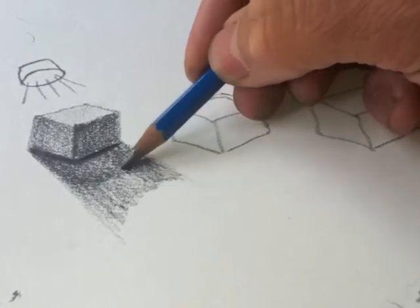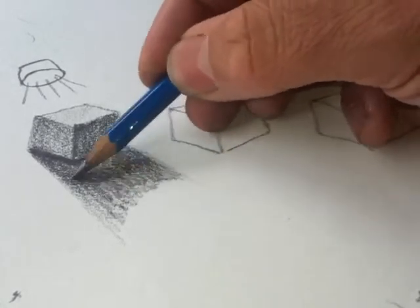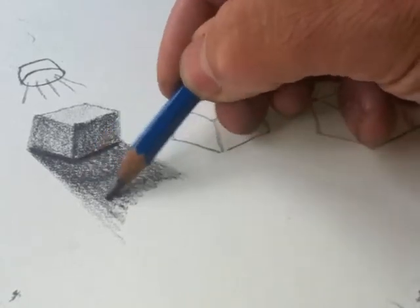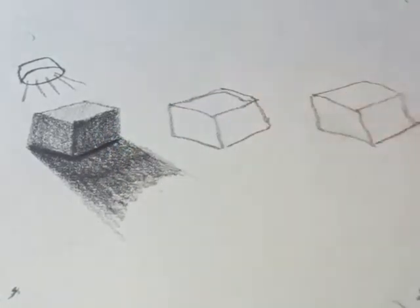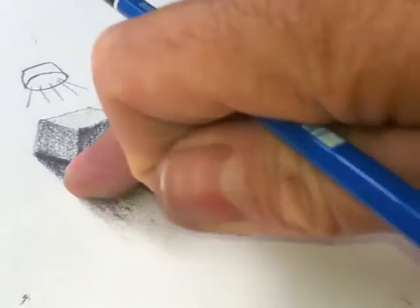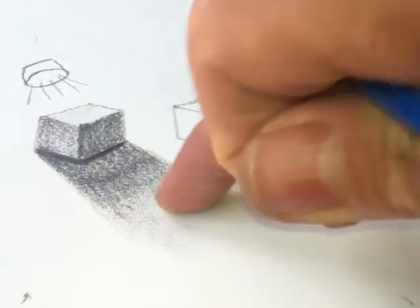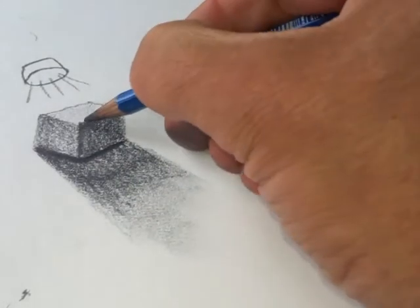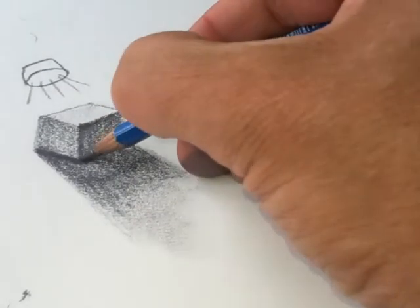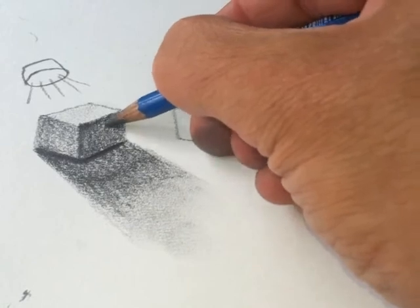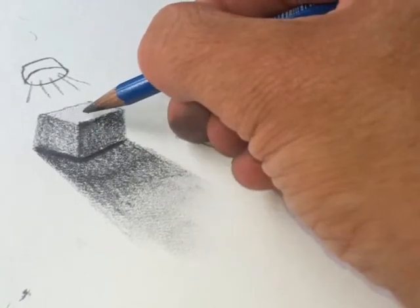So you need to blend that in so you don't see where it's gone dark and light, and that uses the technique that we've learned before about the shading from light to dark. And this technique is using the solid shading that we learned.